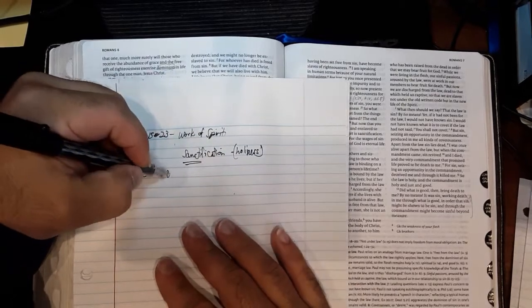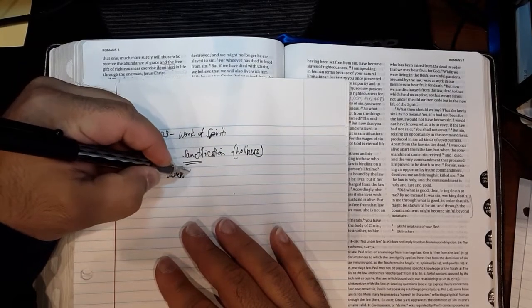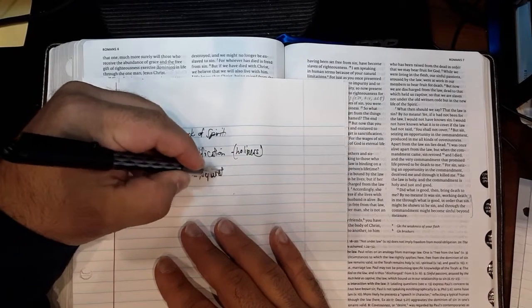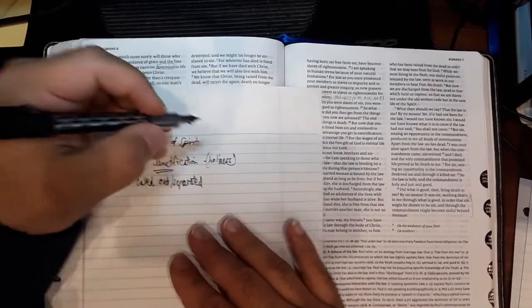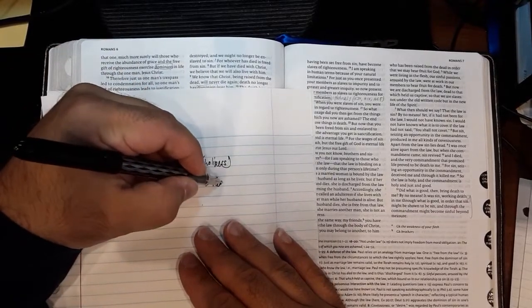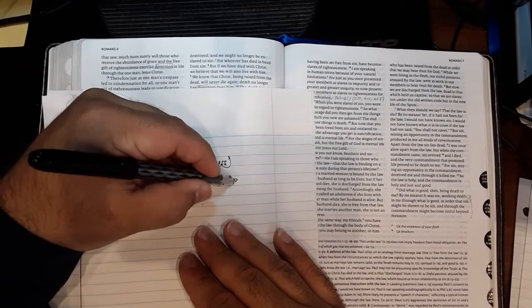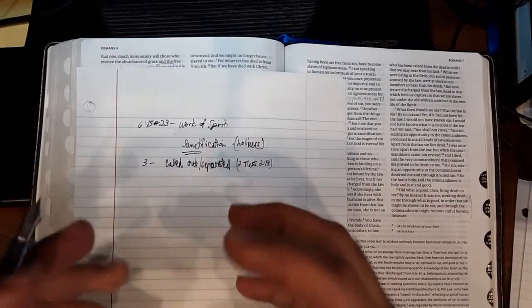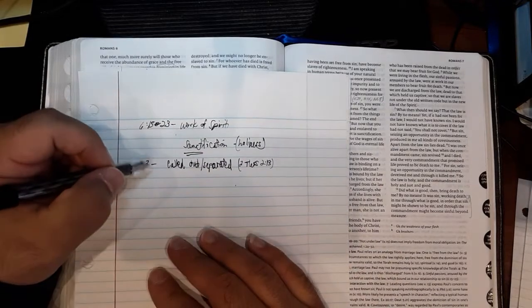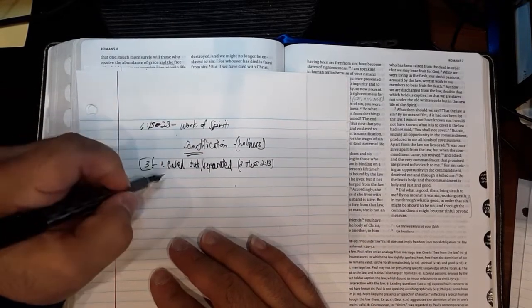It is being called out. Called out or separated, set apart. A good cross reference is Second Thessalonians 2:13. So it's that act of salvation of being called out, set apart. It's three aspects to sanctification.